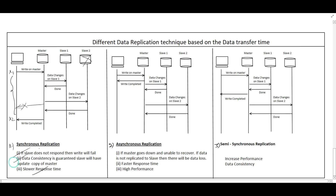The benefit is that data consistency is guaranteed because data is updated in both master and slaves together. Even if the master goes down, we can immediately serve read and write requests from the slaves. However, there will be a slower response time because we hold the thread until all transactions between master and slaves succeed.